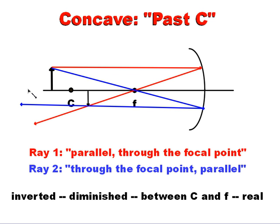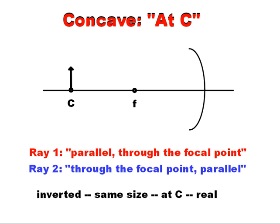It is smaller, so we say it's diminished. It's upside down, so we say it's inverted. Its position is between C and F, between C, center of curvature, and F, the focal point. And we call this a real image, and you're going to see why we call it a real image in a moment when we see the opposite of a real image, a virtual image.